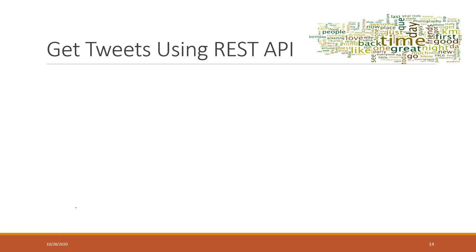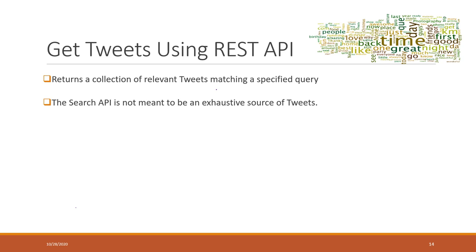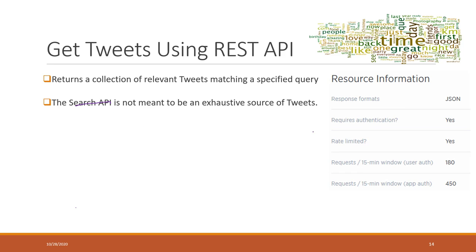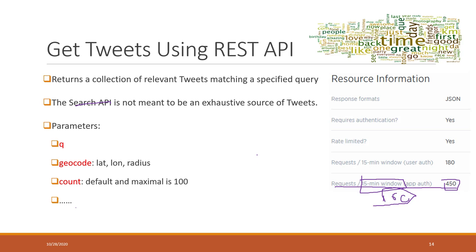Let's talk about the REST API. The REST API is more like you send out a request and it returns a collection of tweets matching your specific query. However, the standard search API will not return all tweets — there are limitations. For the standard REST API, every 15-minute window you can only make a certain number of requests, and for each single request you can return no more than 100 tweets.